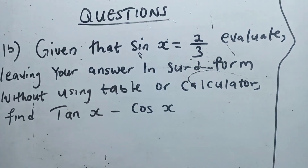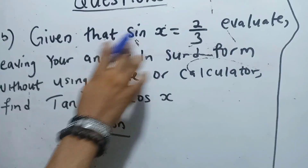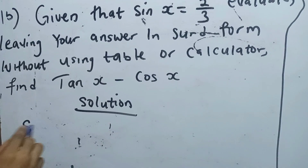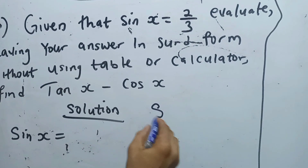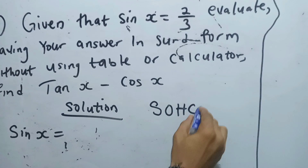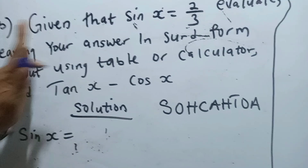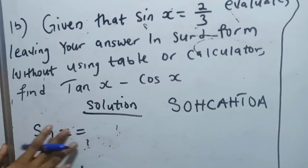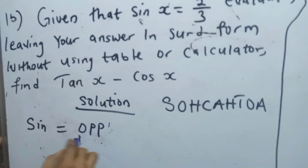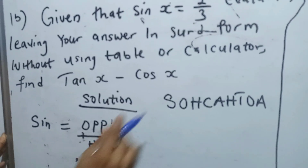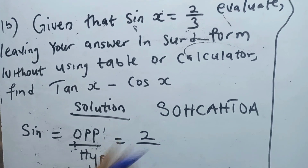For me to solve this, I must represent this with an angle, so I will use a triangle to illustrate this question. Given that sin x equals 2 over 3, we need to remember what sin means. Sin equals opposite over hypotenuse. So our opposite is 2 and our hypotenuse is 3.